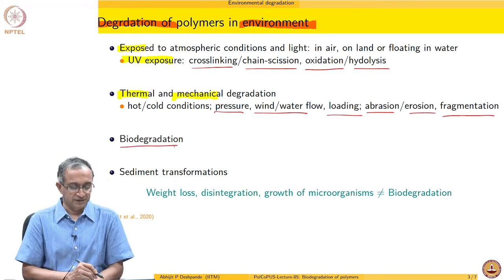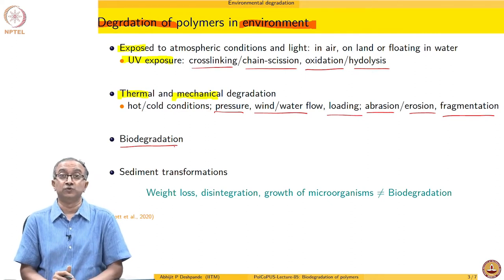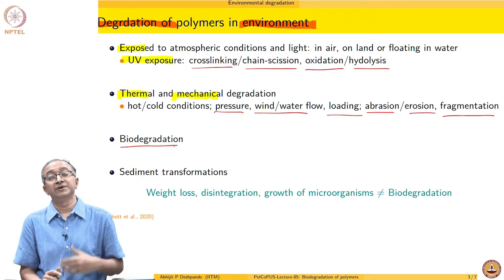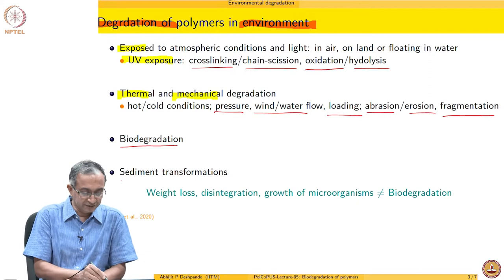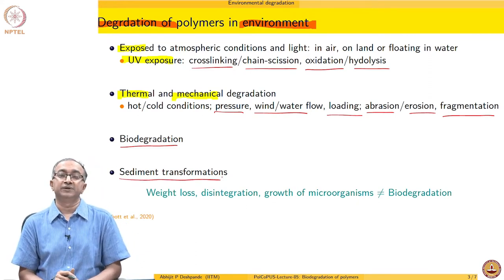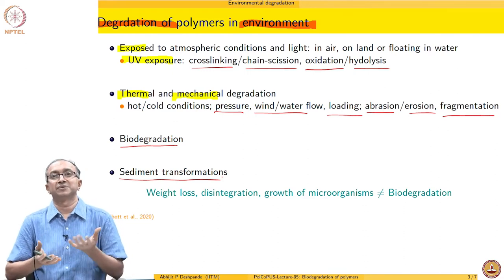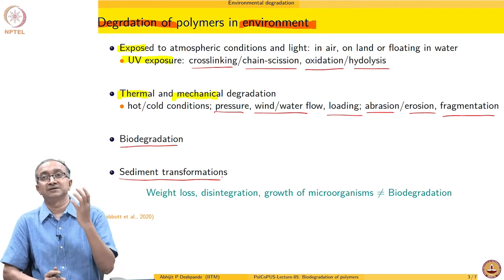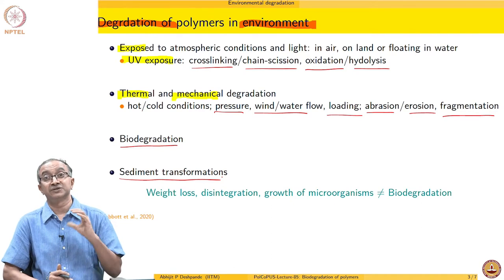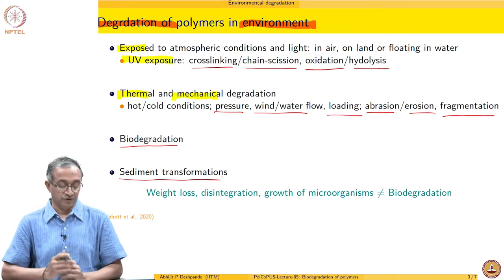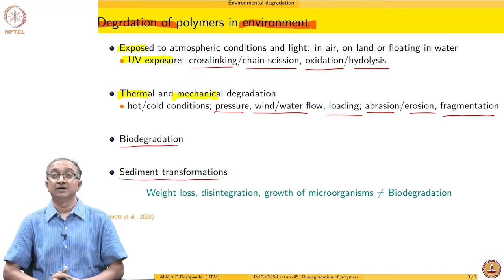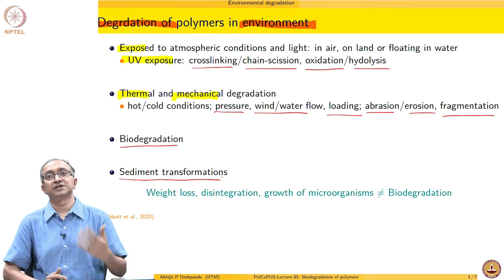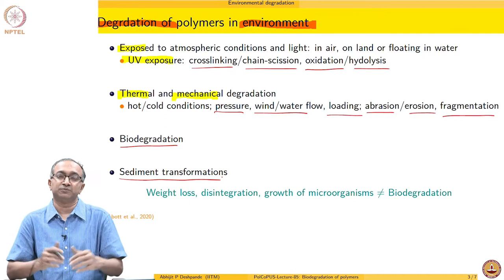We also have biodegradation, which is what we will discuss from now on, which basically implies the involvement of biological species — it could be microorganisms. We will discuss how biodegradation is different compared to these other degradative processes. One other aspect of polymeric transformations is sediment transformations. We know, for example, that petroleum is available because of the biomass that got embedded in sediments millions of years ago and then got transformed. So under conditions of no UV light and less moisture, but because of thermal and high pressure conditions, chemical transformations can happen leading to sediment transformations.